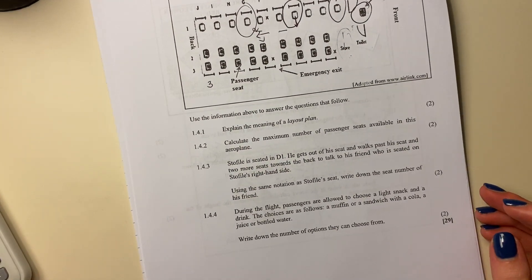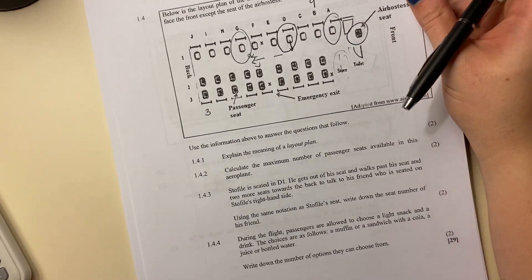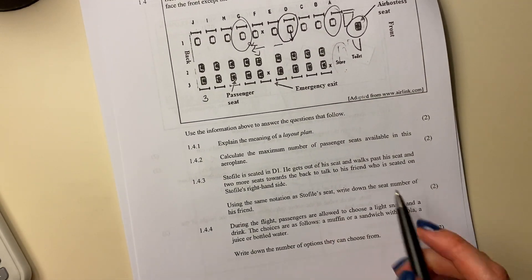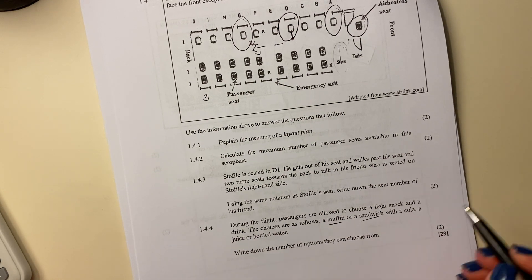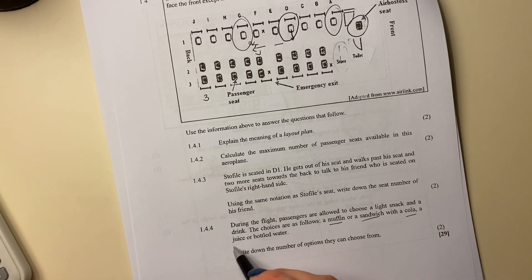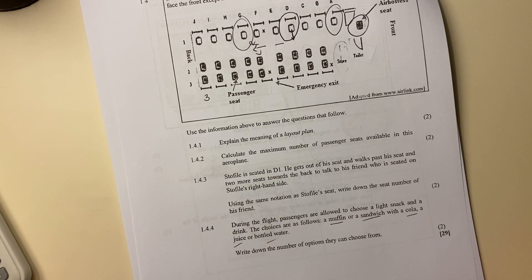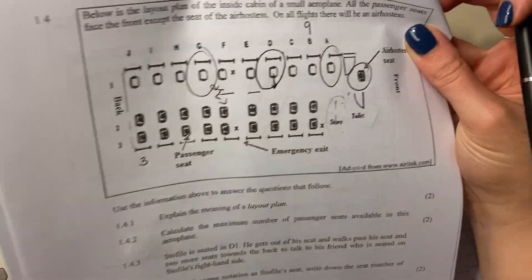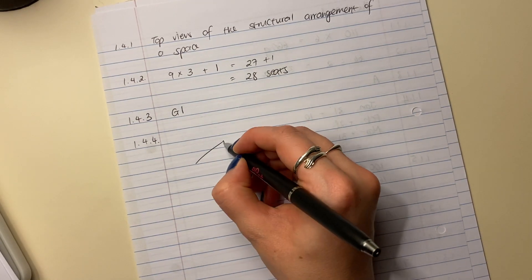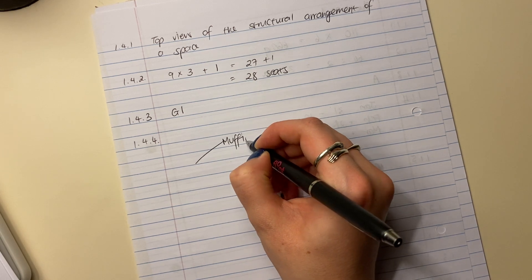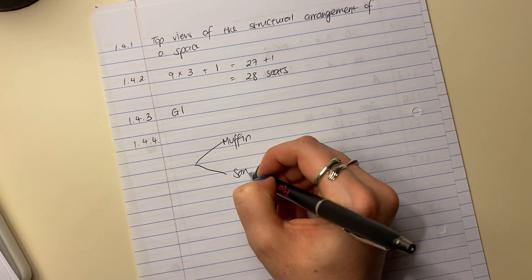Let's look at 1.4.4. It says during the flight, passengers are allowed to choose a light snack and a drink. The choices are a muffin or a sandwich with a cola, a juice, or bottled water. Write down the number of options they can choose. So the best way to visualize this, the best way to do this is to visualize it.